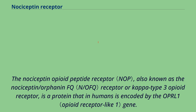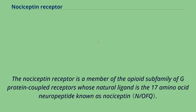The nociceptin opioid peptide receptor, also known as the nociceptin/orphanin-FQ receptor or kappa-type 3 opioid receptor, is a protein that in humans is encoded by the OPRL1 gene. The nociceptin receptor is a member of the opioid subfamily of G-protein-coupled receptors whose natural ligand is the 17-amino acid neuropeptide known as nociceptin.